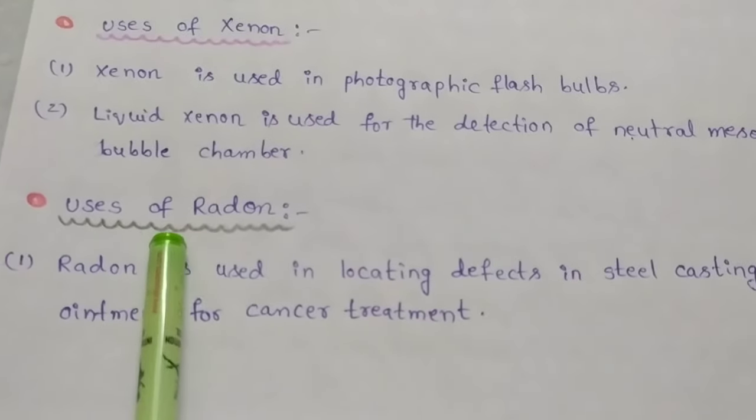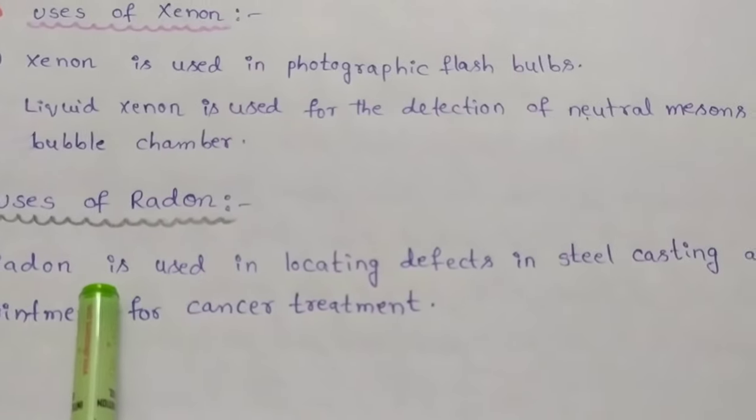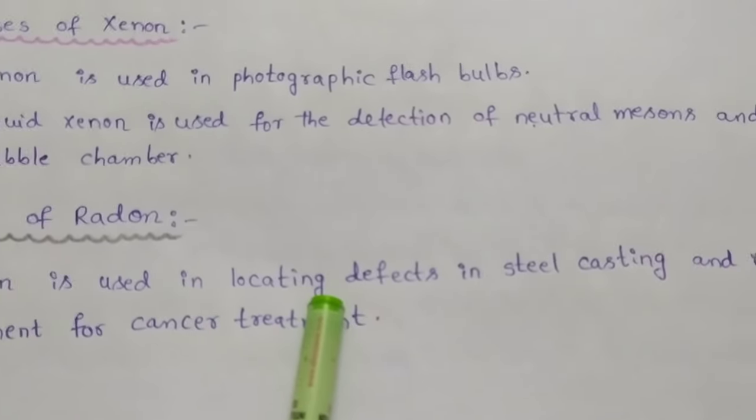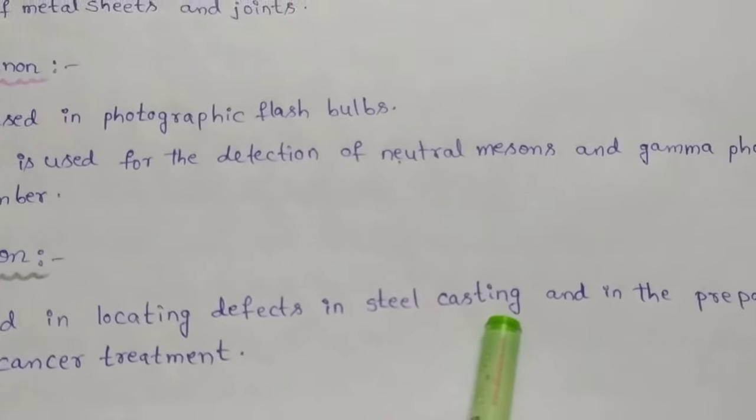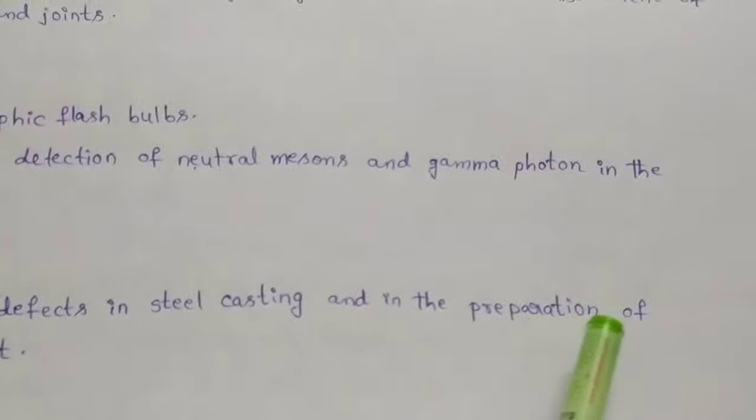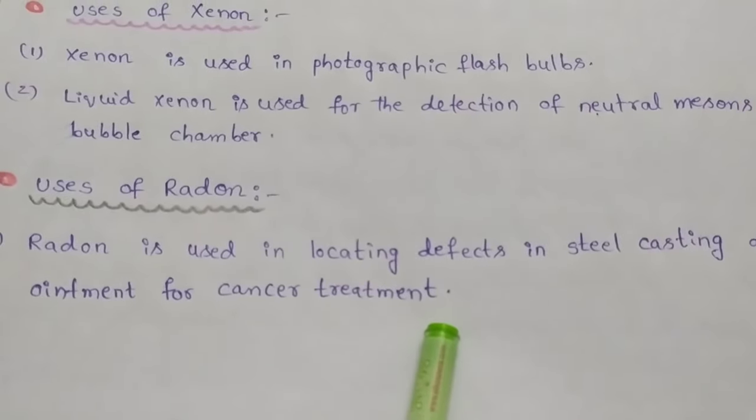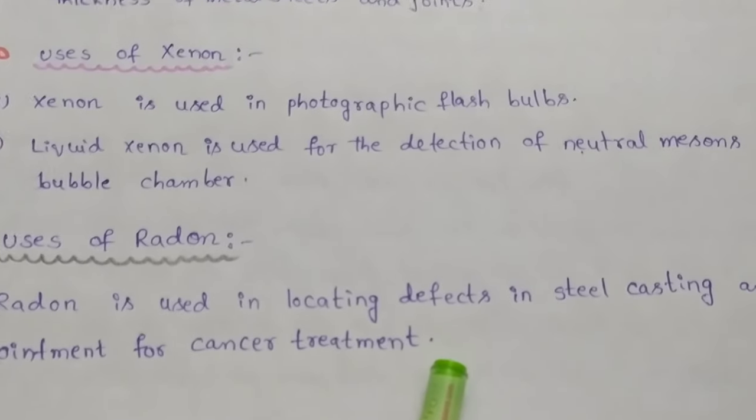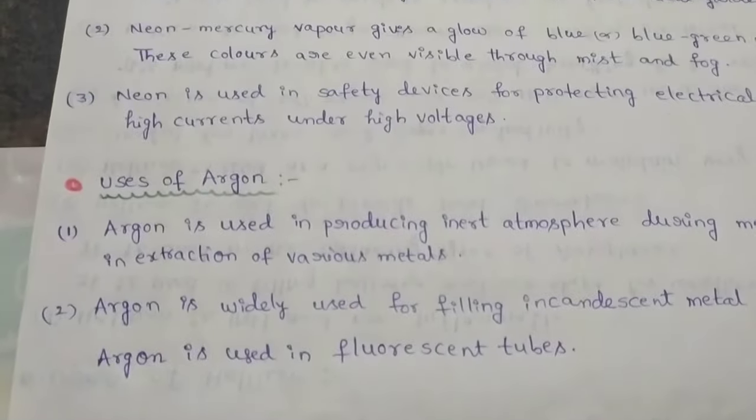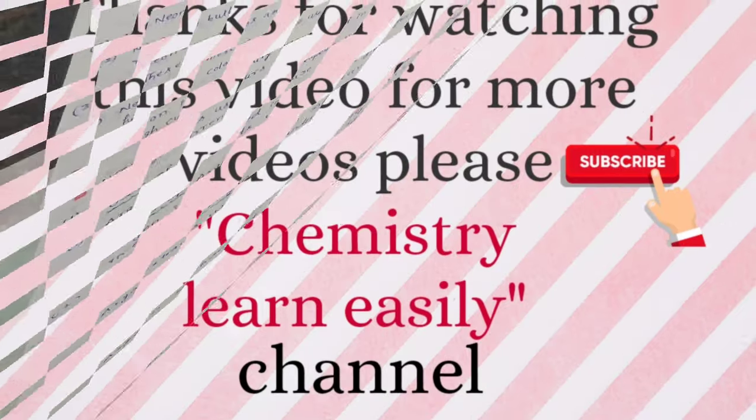Now we discuss the uses of radon. Radon is used in locating defects in steel casting and in the preparation of ointments for cancer treatment. These are the uses of noble gases. Thank you for watching this video.